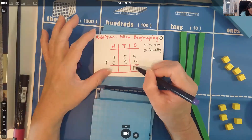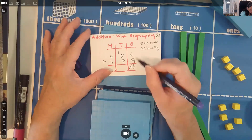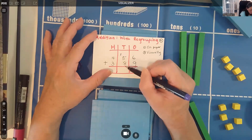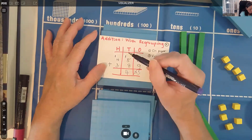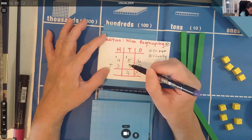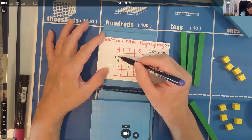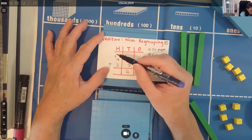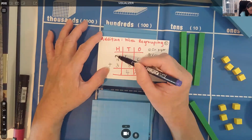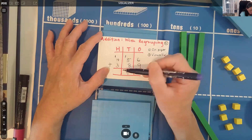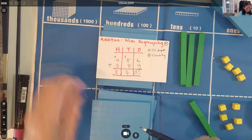We carry that one ten over. Now five plus eight is 13, plus the carried 1 is 14. Write 4 and carry one ten to the hundreds column. In the hundreds: one plus four is five, plus three is eight. So the answer is 845.